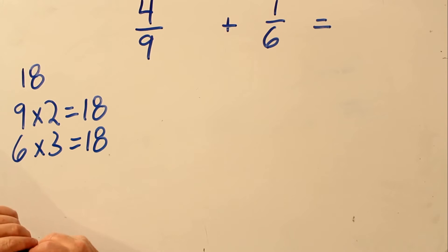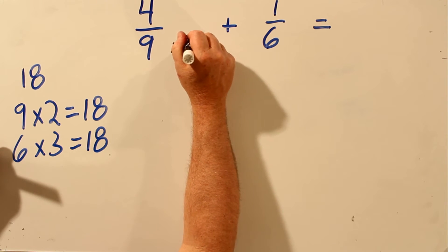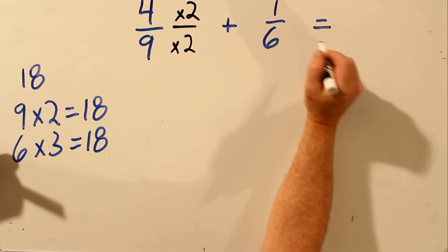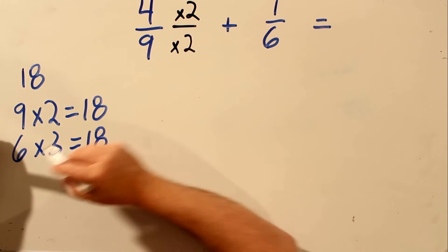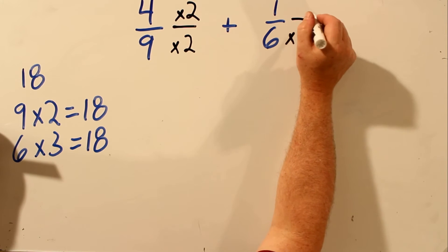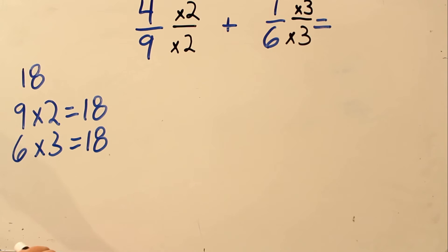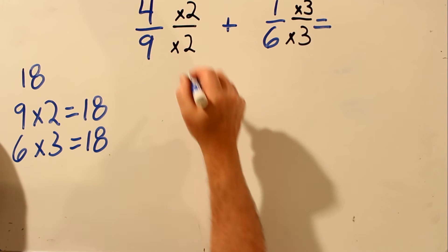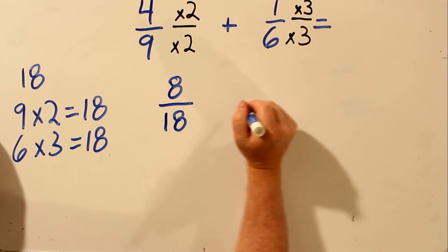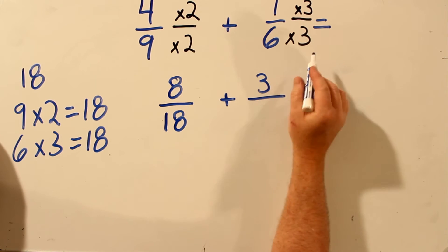So knowing that, in order to make this bottom number 18, we have to multiply it by 2. And if we multiply the bottom number by 2, we have to multiply the top number by 2. And over here, we have to multiply by 3 because 6 times 3 is 18. And if we multiply the bottom number by 3, we have to multiply the top number by 3. So let's do our multiplication: 4 times 2 is 8, and 9 times 2 is 18. Over here, we have 1 times 3 is 3, and 6 times 3 is 18.